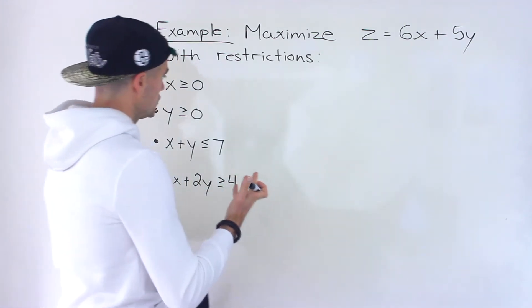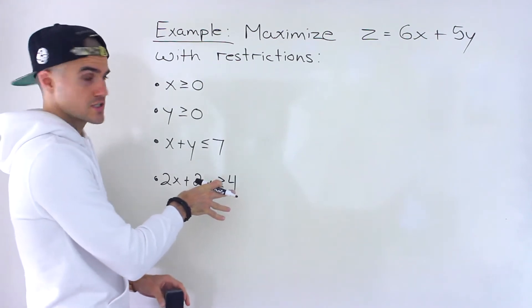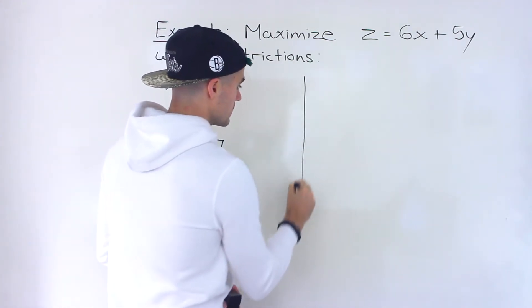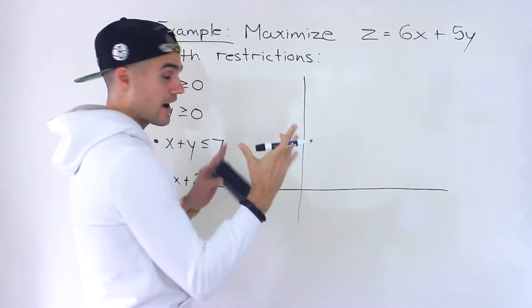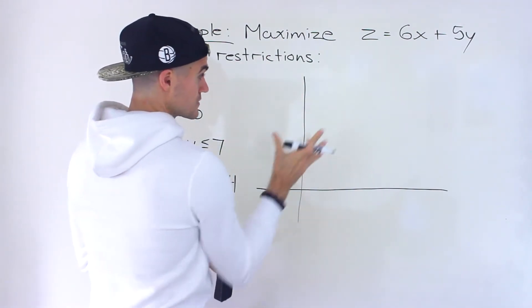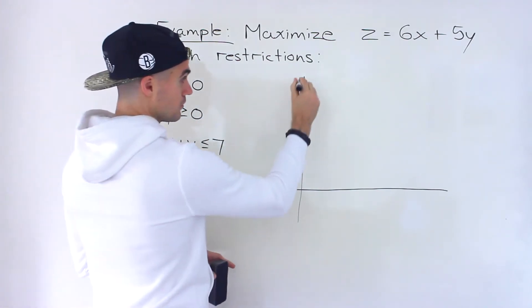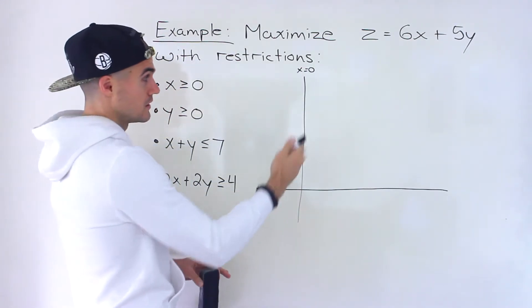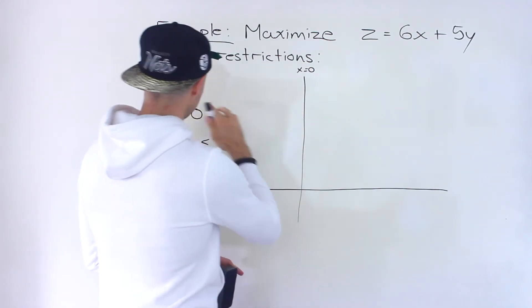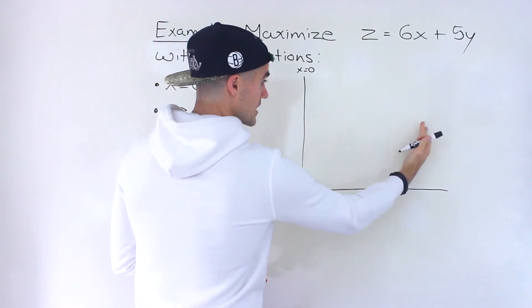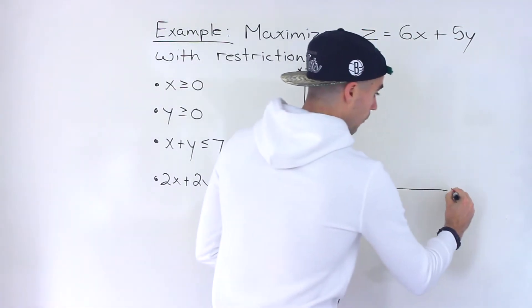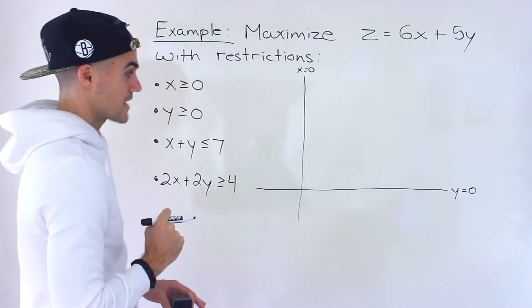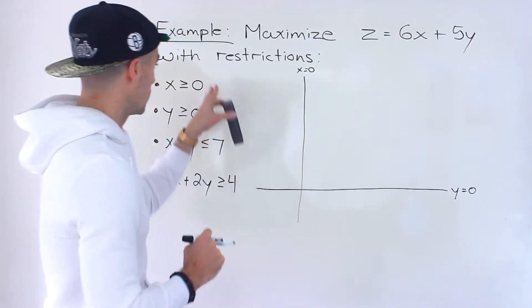The first thing I'm going to do is graph these restrictions — these are lines. Notice that x is greater than or equal to zero and y is greater than or equal to zero just means the area we're going to look at is in the first quadrant. x equals zero is the y-axis, so x greater than or equal to zero is everything to the right. y equals zero is the x-axis, so y greater than or equal to zero is everything above it.